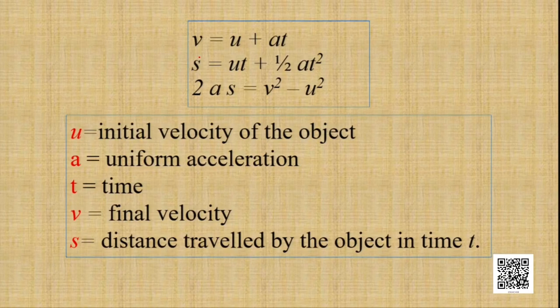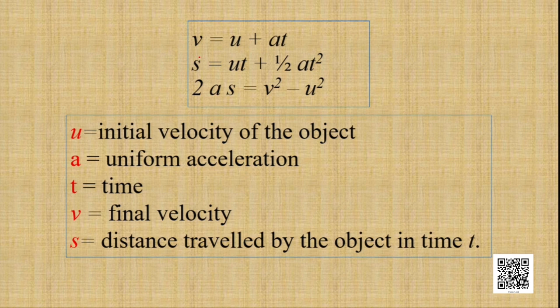Those three equations are: v is equal to u plus at; s is equal to ut plus half a t squared; and 2as is equal to v squared minus u squared. Here, u is the initial velocity of the object, a is the uniform acceleration, t is the time interval, v is the final velocity, and s is the distance traveled by the object in time t.